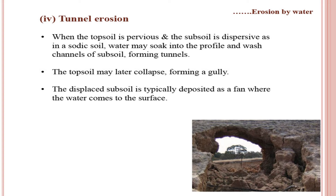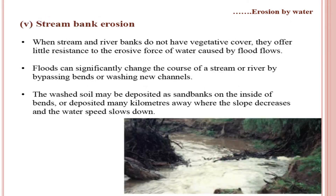Tunnel erosion occurs when the topsoil is pervious and the subsoil is dispersive, as in a sodic soil. Water soaks into the profile and washes channels of subsoil, forming tunnels. The topsoil may later collapse, forming a much larger gully. The displaced subsoil is typically deposited as a fan where the water emerges. Stream bank erosion occurs when rivers in flood remove soil from banks that lack vegetative cover; floods can significantly change a stream's course, depositing soil as sand banks on bends or many kilometers away.